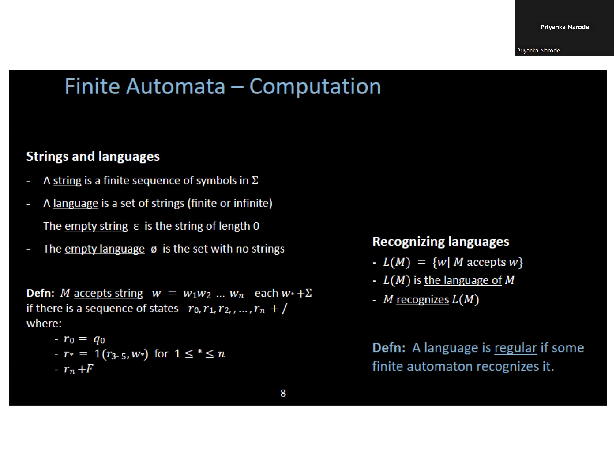The empty string is shown as epsilon. Epsilon is the string of length 0. The empty language phi is the set with no strings.